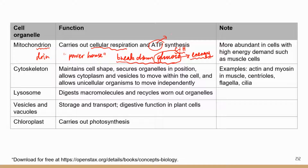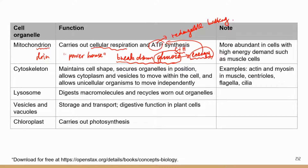The cell may not need the energy right away, so it needs a way to store energy temporarily — this is where ATP comes in. Think of ATP as a rechargeable battery. When glucose is broken down, the energy released is stored in ATP. Once the cell needs energy, it can break down ATP and release that energy. So mitochondria's job is cellular respiration and making the rechargeable battery for the cell.